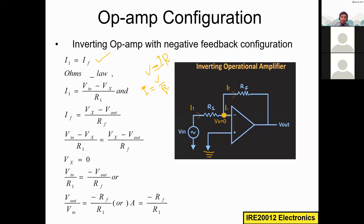Applying Ohm's law, I1 equals the potential difference across R1, which is Vin minus Vx, divided by R1. Similarly, we apply Ohm's law to find If. If equals the potential difference across Rf, which is Vx minus Vout, divided by Rf. So now we know expressions for both I1 and If.